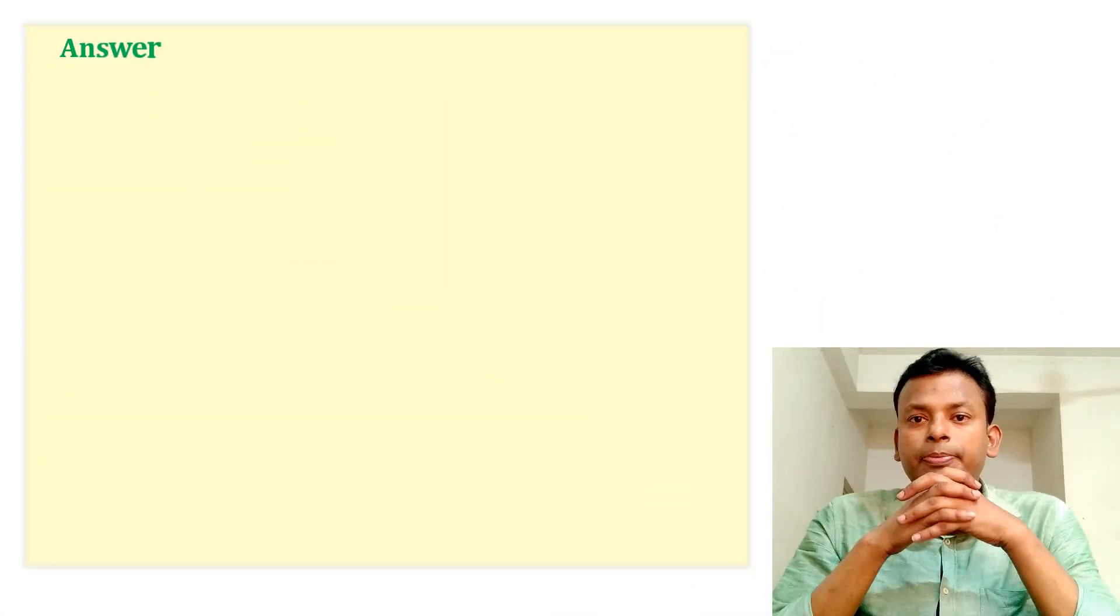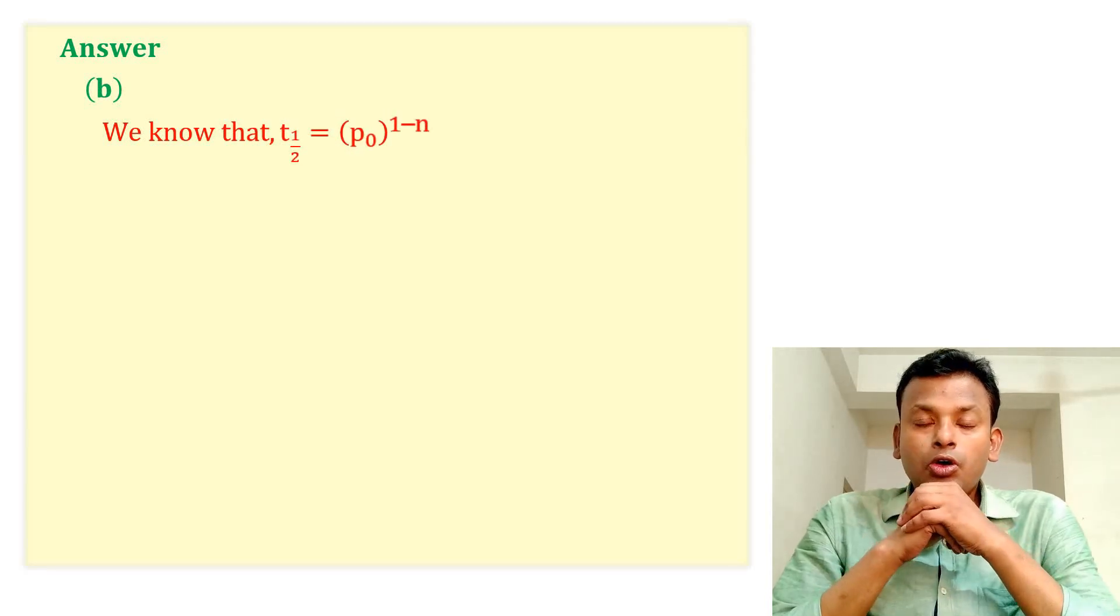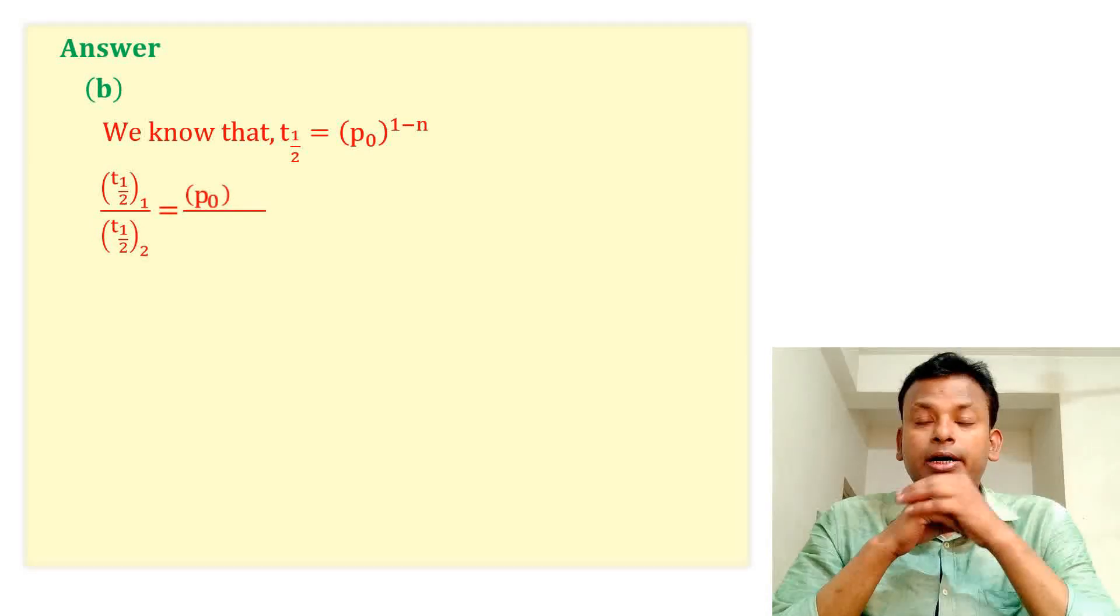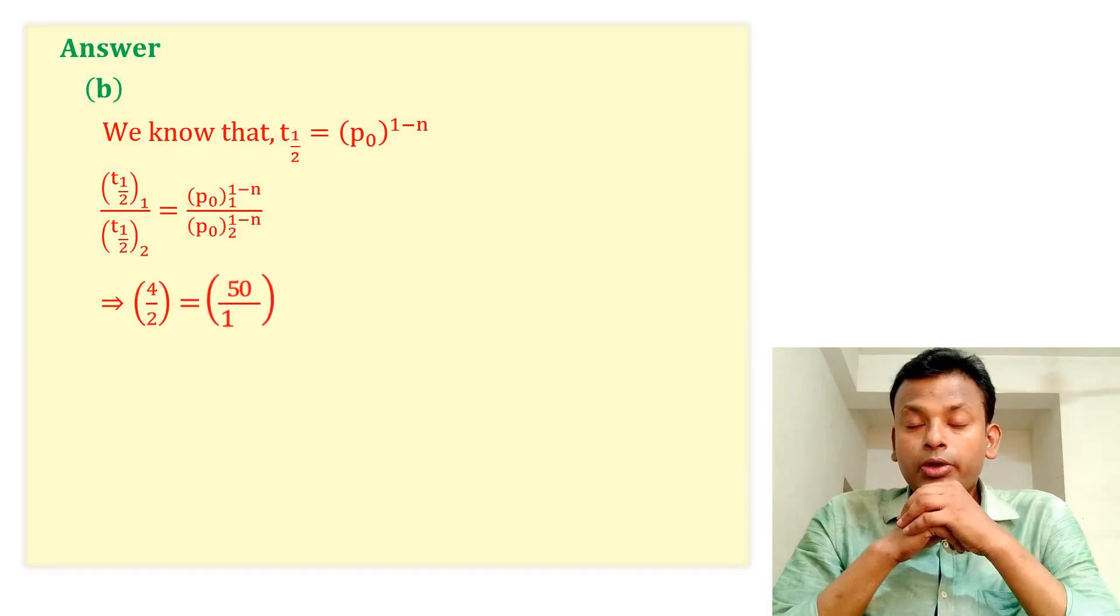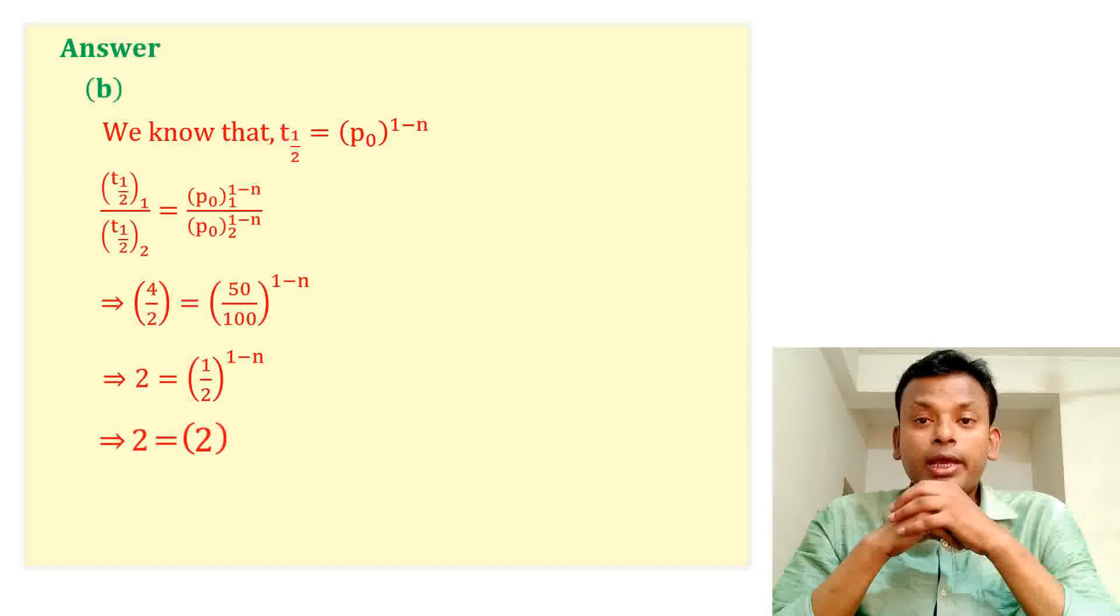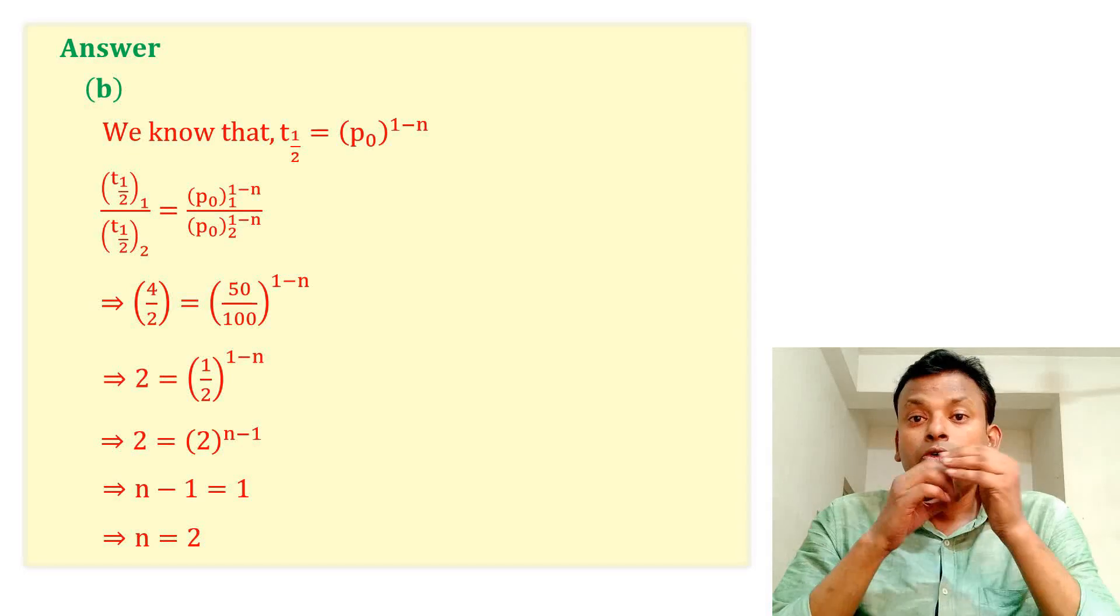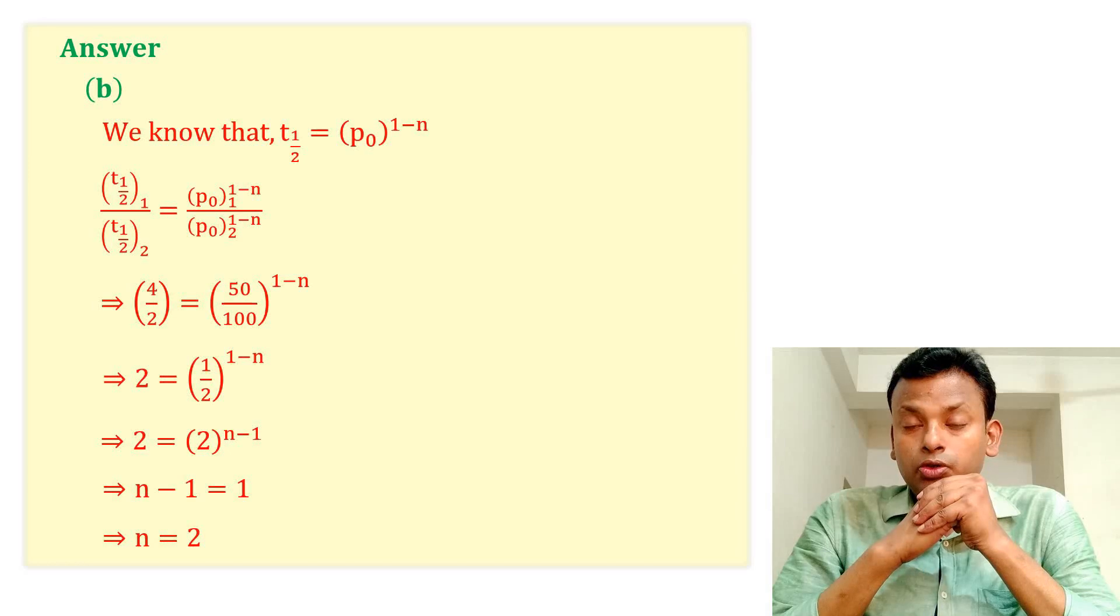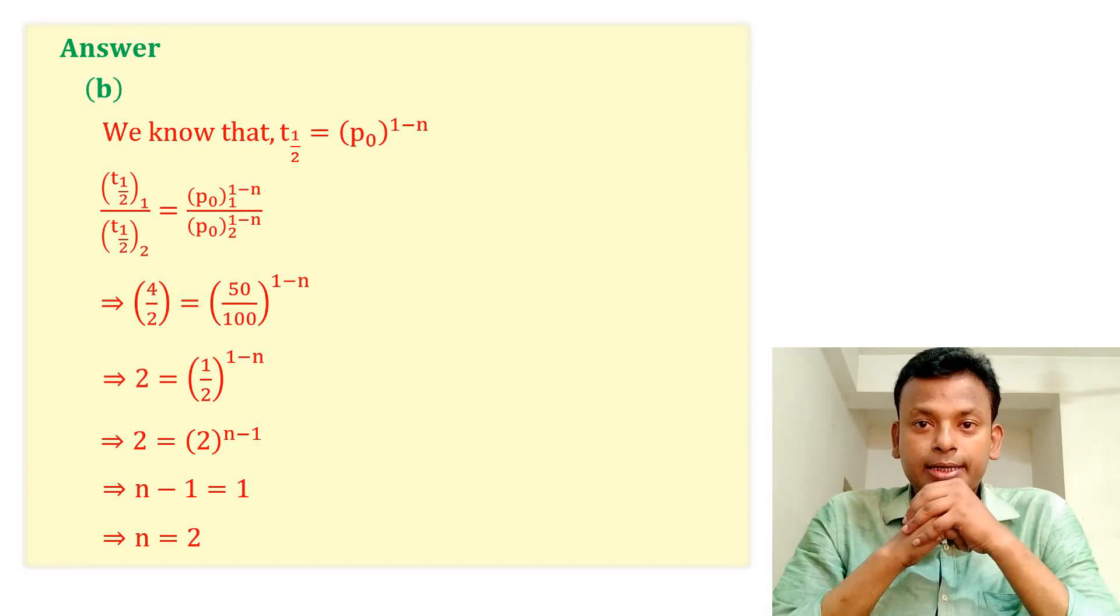Answer: Option B is correct. We know that t half equals to P zero to the power one minus n. We will compare the data and then we will get n. Putting all values, n equals to two, where n equals to order of reaction. So order of reaction is two, that is second order reaction.